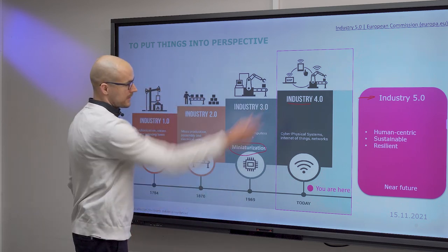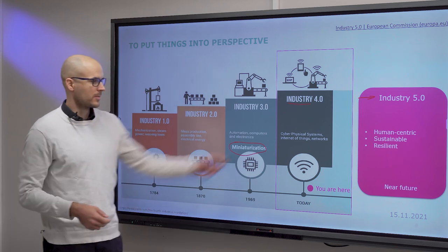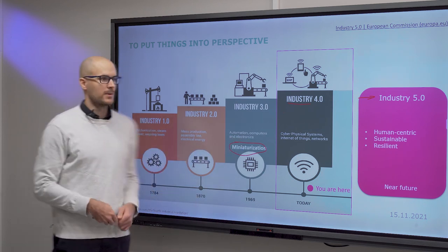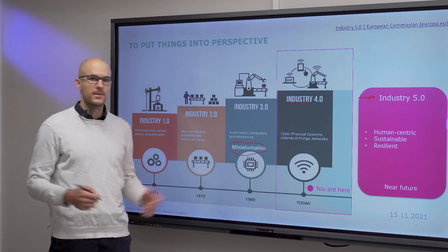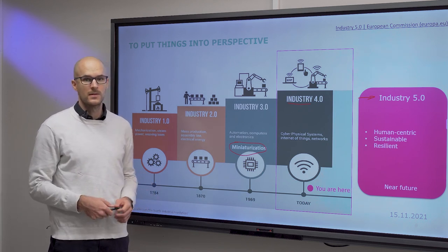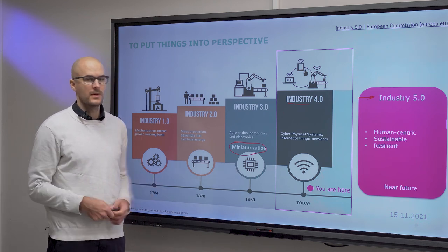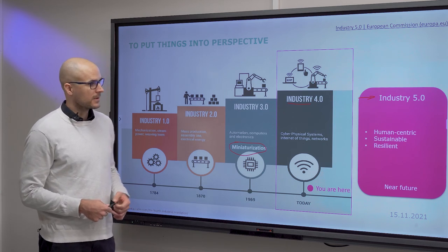If you know about Industry 4.0, then main characteristics are that now we refer to cyber-physical systems. We have terms like the Internet of Things and is largely about networking and artificial intelligence in both production and devices that we use in our everyday life.